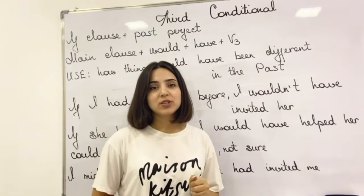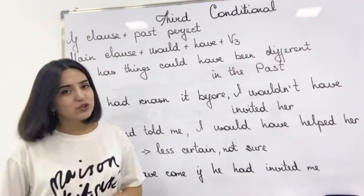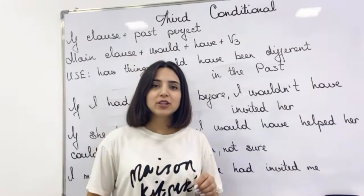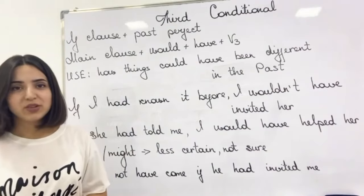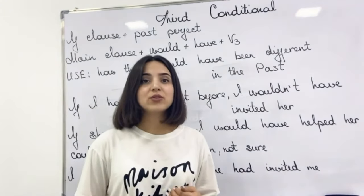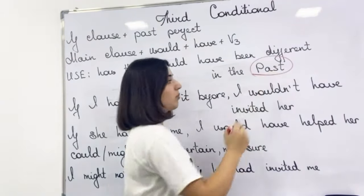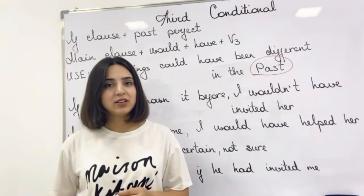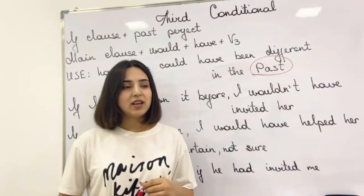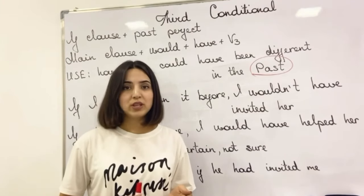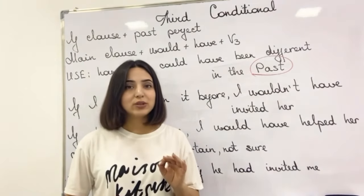Now we are going to speak about third conditional, which is the fourth type of conditional sentences. For its formula, we should use past perfect tense form in the if clause, and in the main clause we should use would plus have plus verb three — also called the past participle. We use it when we want to say how things could have been different in the past. It's about the past. Both actions in the if clause and in the main clause happened or didn't happen in the past. It is usually about our regrets — we regret what we didn't do or what we did in the past, and its consequence or result in the past.